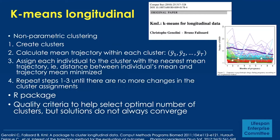K-means longitudinal is a non-parametric clustering method. The approach creates clusters and then calculates the mean trajectory within each cluster. The algorithm tries to minimize the distance between an individual's mean observation and the trajectory group mean, then assigns individuals into clusters where that distance is minimized. These steps are repeated iteratively until there are no more changes in cluster assignment. There's a nice R package called KML that can be used to do this.